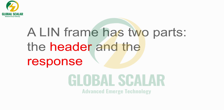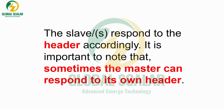The frame transmitted from master to slave has two parts: header and response. The header contains break, sync, and identifier fields. The slave responds to the header accordingly. It is important to note that sometimes the master can also respond to its own header. Data is transferred from master to slave with the slave responding based on the information received.